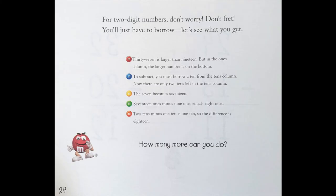For two digit numbers, don't worry, don't fret. You'll just have to borrow, let's see what you get. 37 is larger than 19, but in the 1's column, the larger number is on the bottom. To subtract, you must borrow a 10 from the 10's column. Now there are only two 10's left in the 10's column.